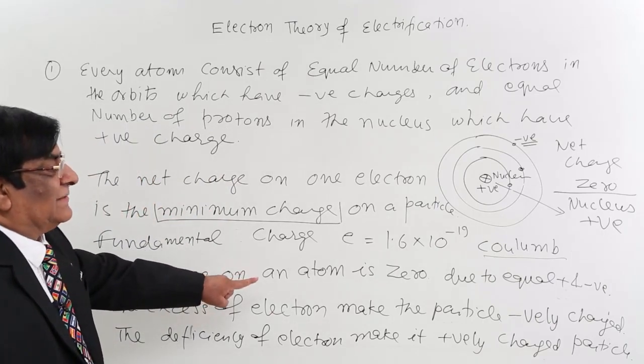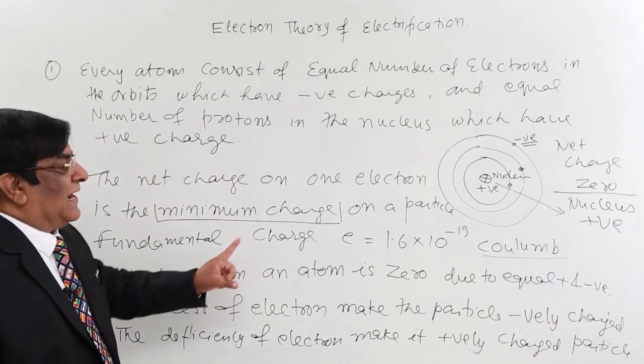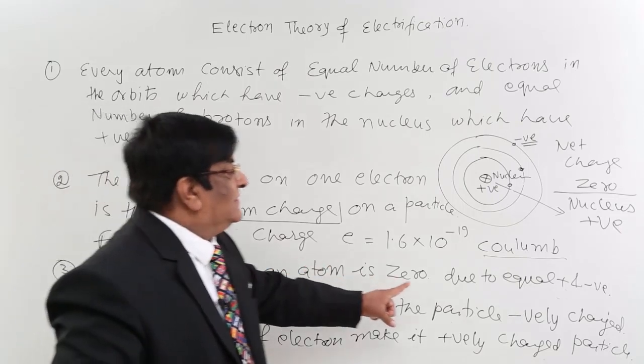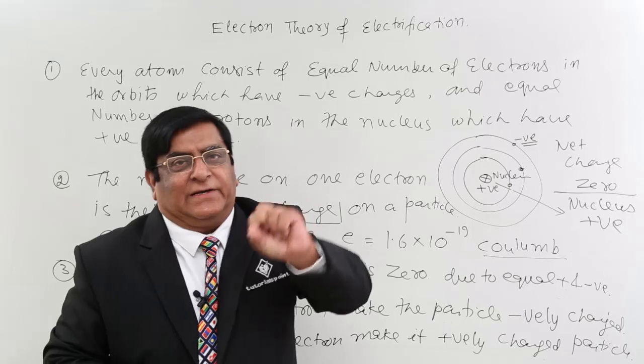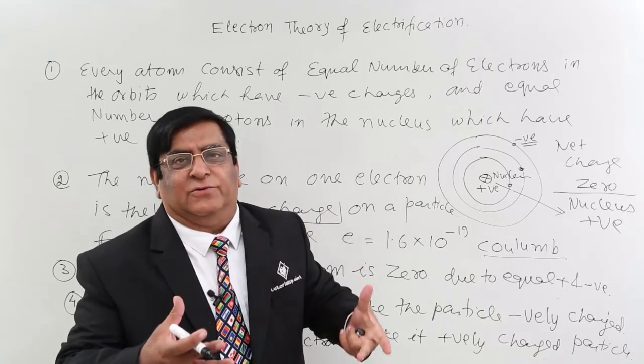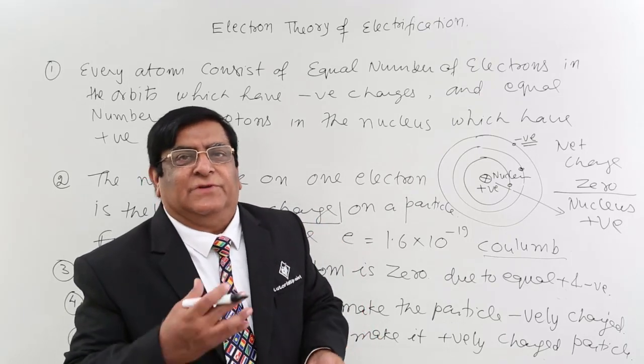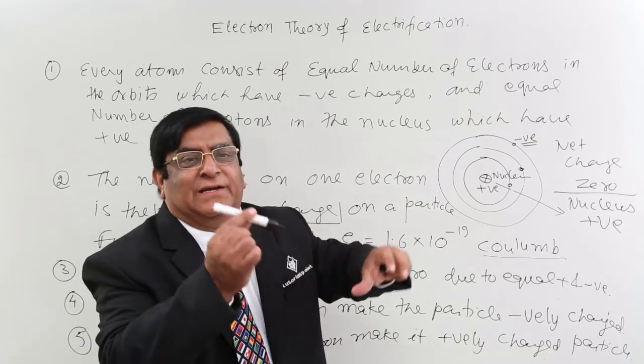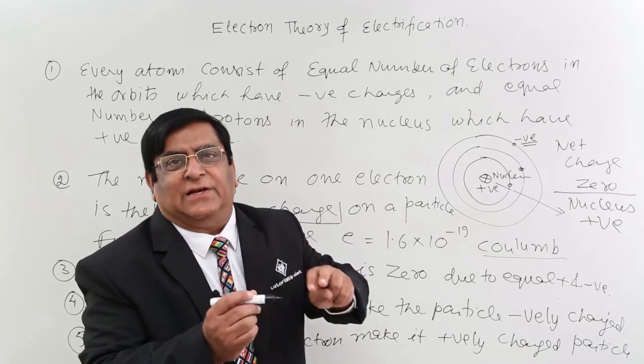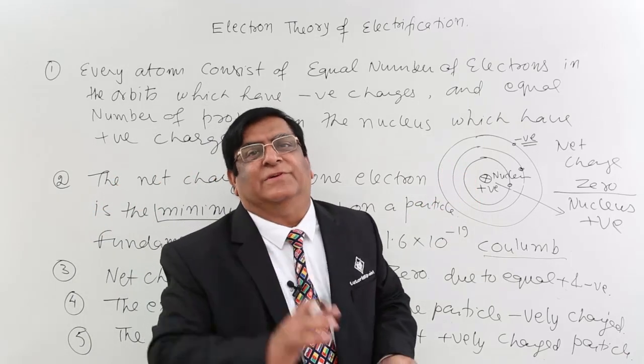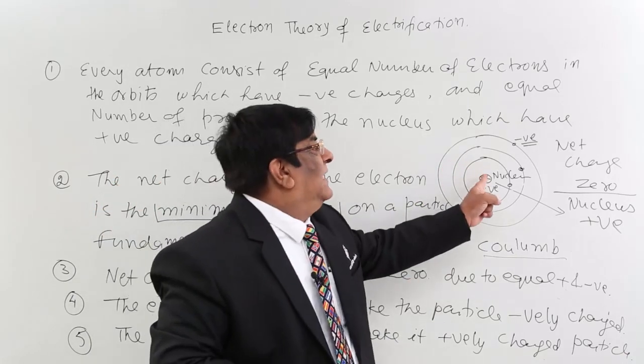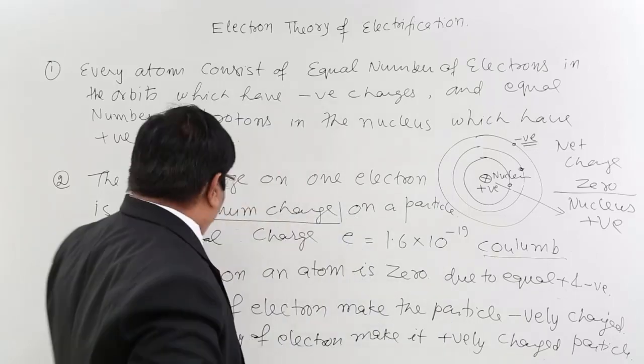Then net charge on the atom, remember net charge on the atom is 0 because there are equal number of protons and electrons. If atom has got charge 0, then with the atom molecules are made, 0 charge. With the molecules any material is made, 0 charge. With the material our complete universe is made. So the net charge of the complete universe is 0 because the net charge of atom is 0.